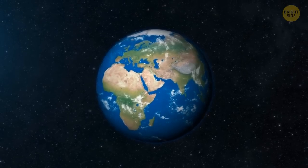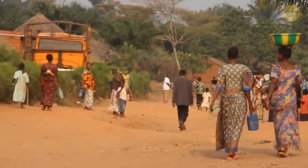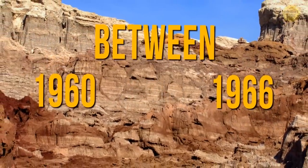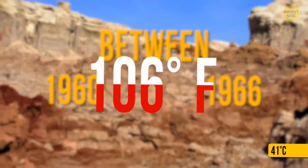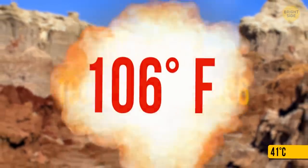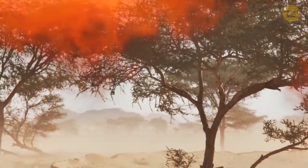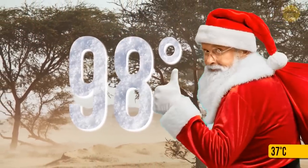De Laal, Ethiopia, is the hottest inhabited place on our planet. Between 1960 and 1966, the temperature was 106 degrees Fahrenheit. And even in the wintertime, the temperature goes up to 98 degrees Fahrenheit on average.